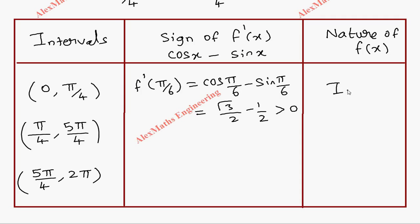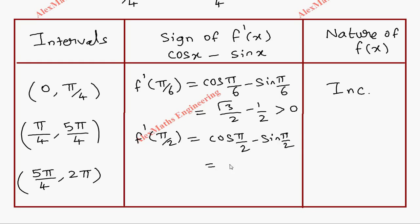Since f'(π/6) > 0, the function is increasing in the first interval. For the second interval, taking x = π/2: cos(π/2) − sin(π/2) = 0 − 1 = −1, which is less than 0. So the function is decreasing in this interval.